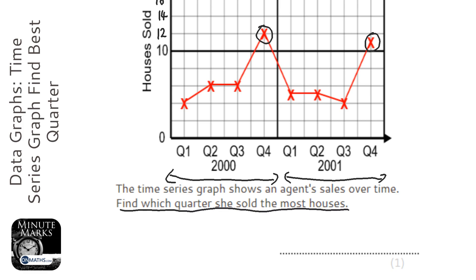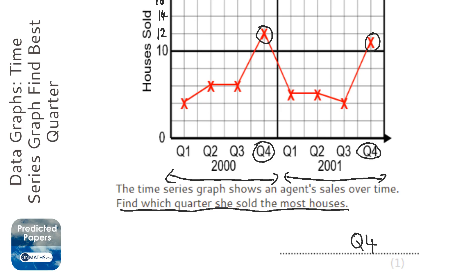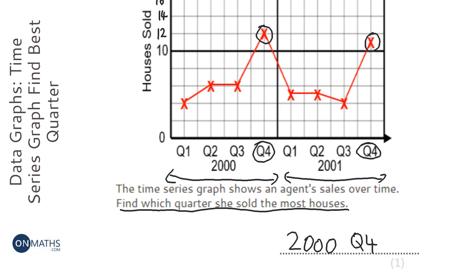It's going to be Q4. We've got to be careful because there are two Q4s — there's the Q4 there and the Q4 there. So it's the one in the year 2000, meaning the answer is year 2000 fourth quarter.